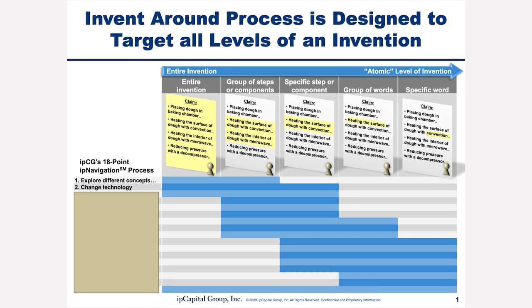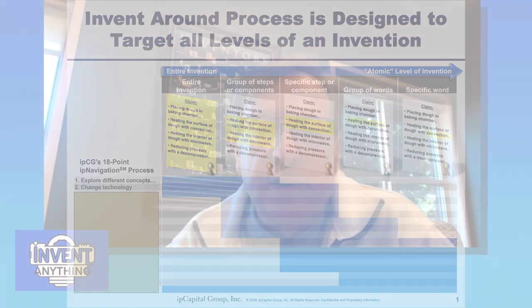So the invent-around checklist can be used on an entire claim, a portion of the claim, or even one word of the claim. Some of the checklist items work very well on just pieces of the claim; some work on the entire claim. We even have one part of the checklist that works on every part of the claim at the same time. So there's a lot of thinking around how to use the checklist to invent around a patent.